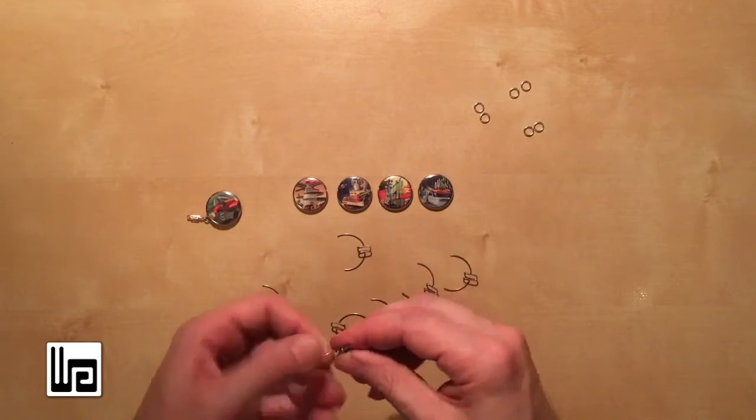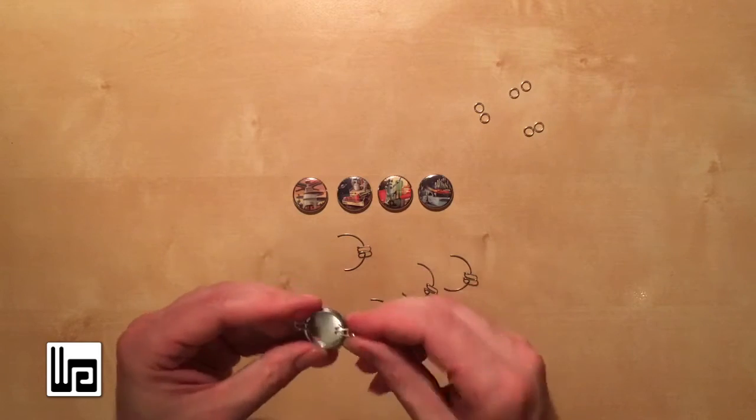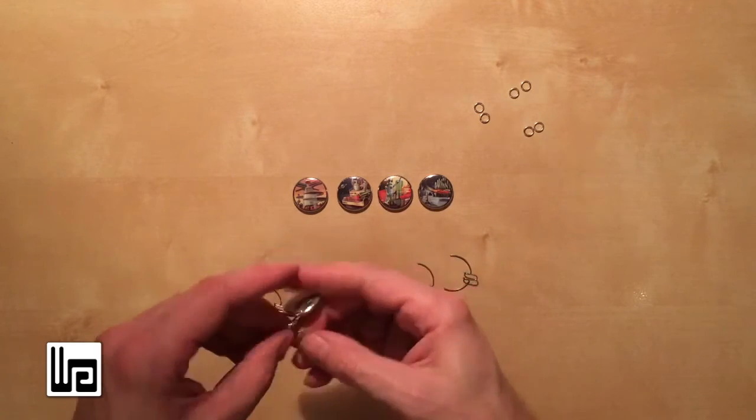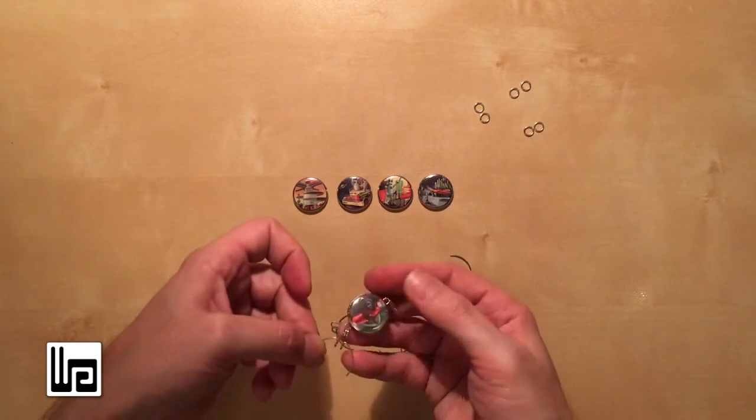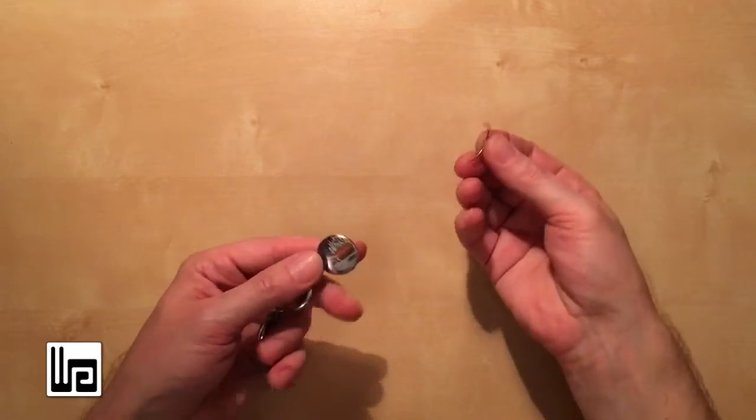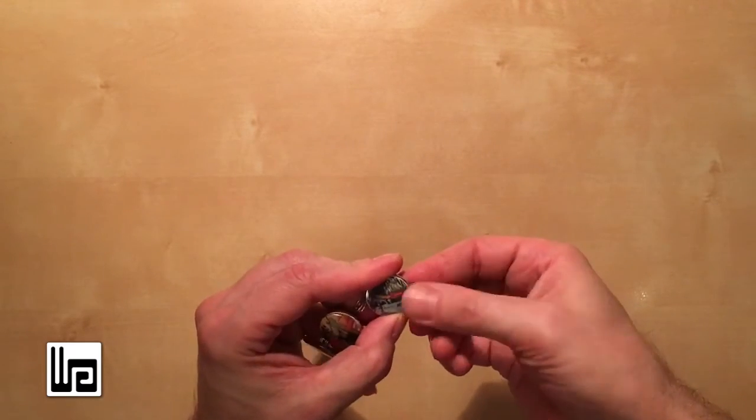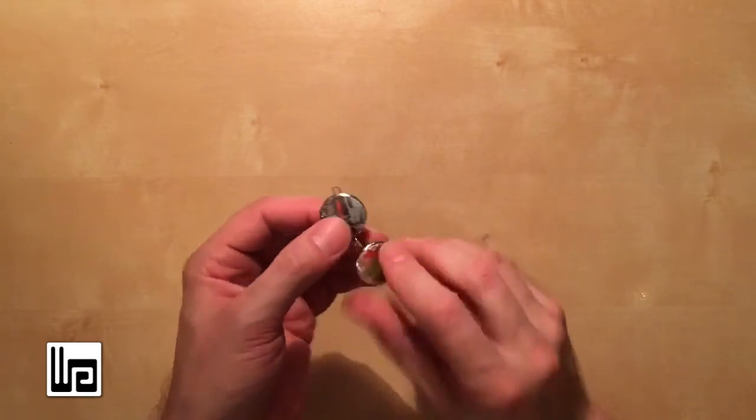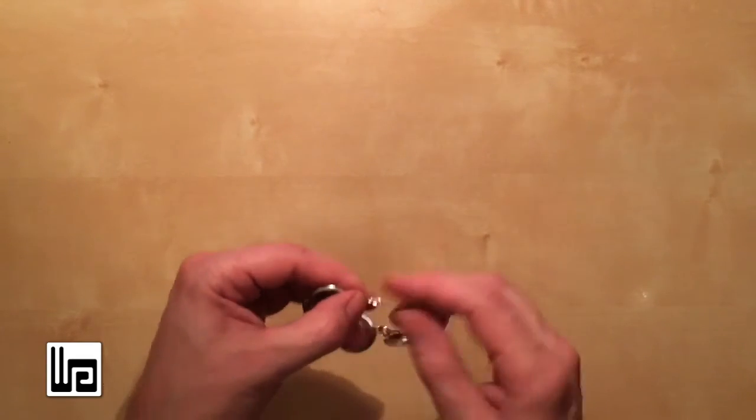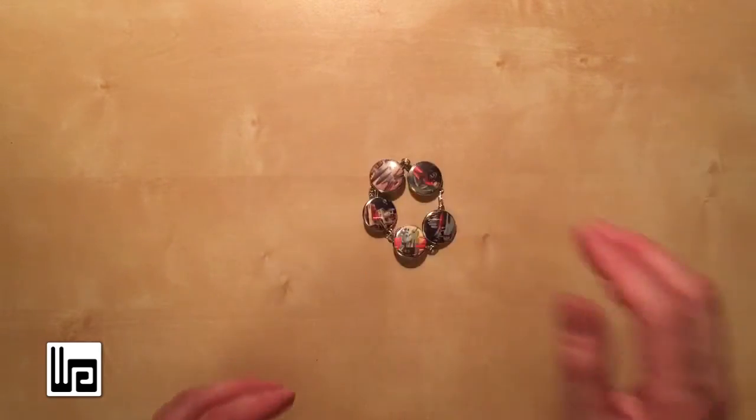And then just continue on. Then you add your next loop, re-insert, like that. And I'll pause it here and finish it up. Alright. Now you like to add the last one. You don't need to add any rings to it because that's going to be what the clasp connects to. And that's what it looks like. Excellent.